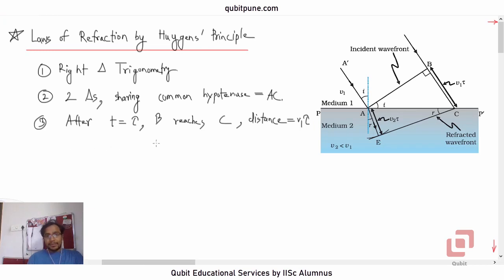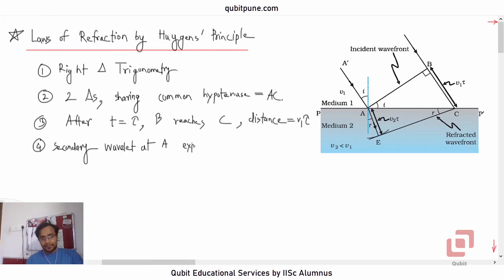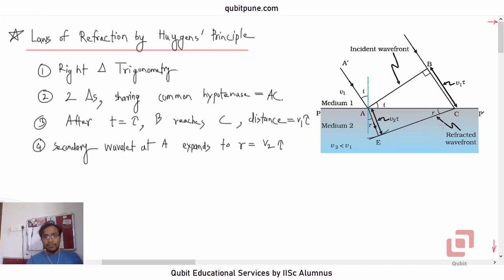The secondary wavelet at A expands with radius V2·tau, because the speed of light in medium 2 is different. By applying the same enveloping logic, we draw tangent CE to get the refracted wavefront, then consider triangles AEC and ABC.